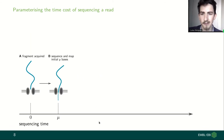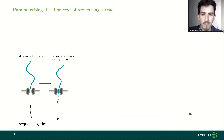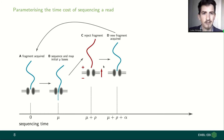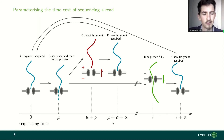Another part we need to take care of is the parameterization of the time cost of sequencing a read. We start by acquiring some fragment at the pore and then sequence the fragment until mu bases, using these initial bases to map the fragment to the reference genome to figure out its starting position and orientation. We can then decide to reject the fragment and wait until a new fragment is acquired at the pore, which adds some constant time cost. Alternatively, we can decide to fully sequence the fragment, which takes the length of the fragment. This is where the time saving and the advantage of dynamic adaptive sampling comes in.